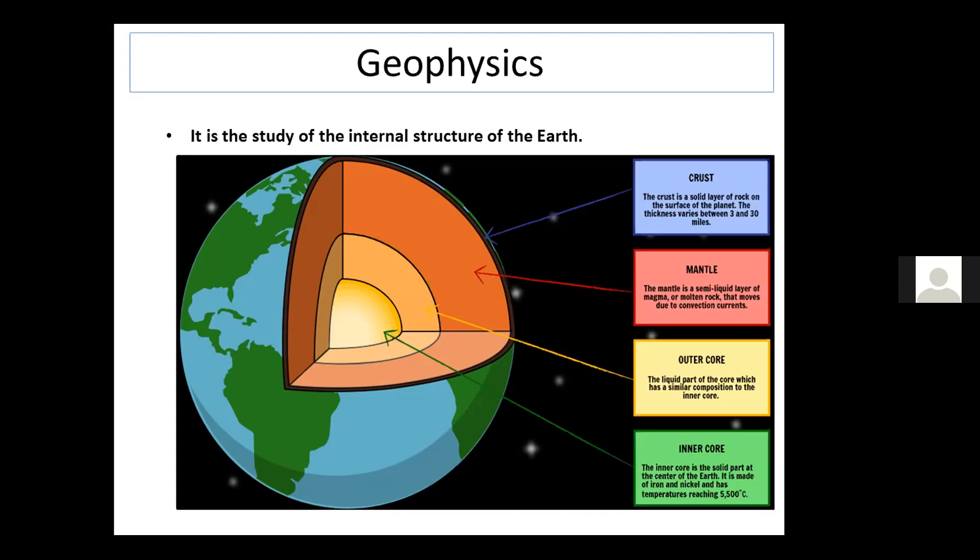Mantle is a semi-liquid layer of magma or molten rock that moves due to convection currents. Outer core is the liquid part of the core which has similar composition to the inner core. Inner core is a solid part at the center of the earth.